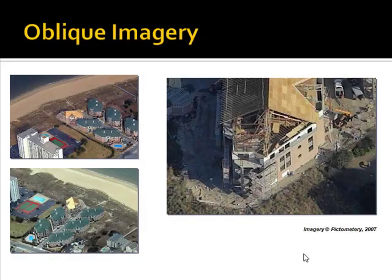It used to be considered that oblique imagery was not good for making measurements. However, a company called Victometry introduced proprietary technology that allows them, with a very specialized system, to collect oblique imagery — that is, sideways-looking imagery — and using their specialized software package, one can make both 2D and 3D measurements.